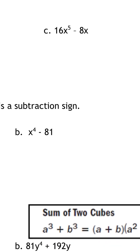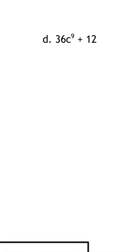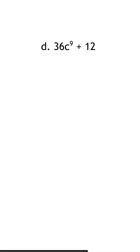For c: 8 and 16 are both divisible by 8, and they both have at least one x, giving me 2x⁴ − 1 inside. The common number is 8 and I can only take out one x because 8x only has one x. For d: 36c⁹ + 12 — they're both even and 36 is a multiple of 12, so I can take out 12. 12 doesn't have a variable so that's my only GCF, leaving 3c⁹ + 1 inside.